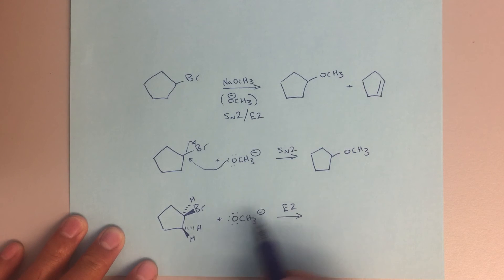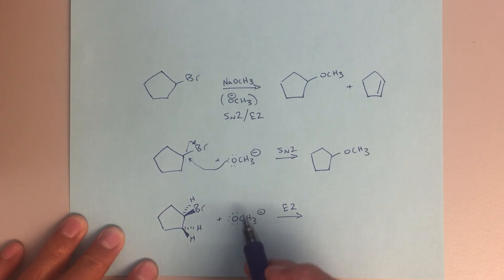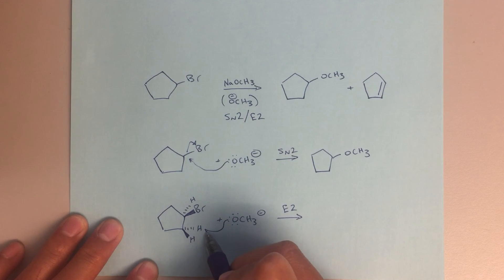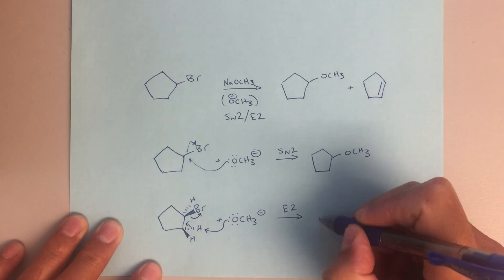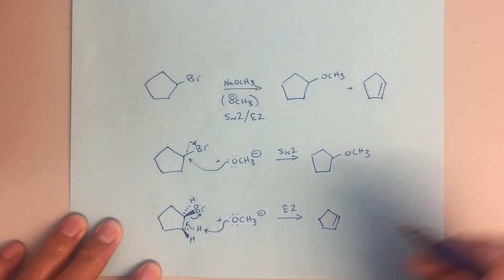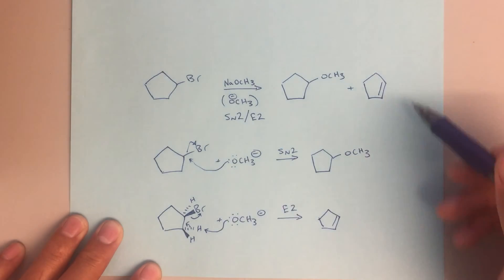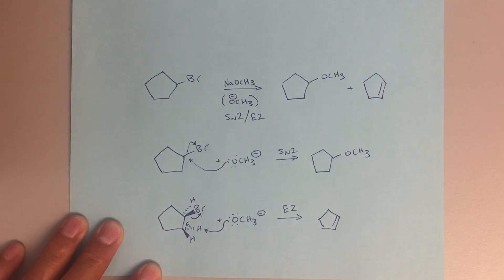So if I'm going to be doing an E2, this methoxide needs to abstract that proton. It's not going to abstract this proton. These electrons are going to drop down, and those electrons are going to leave with a bromine as a leaving group. So that's going to lead me to my second product here of my E2 mechanism, and that's my second product that I'm showing here as well.